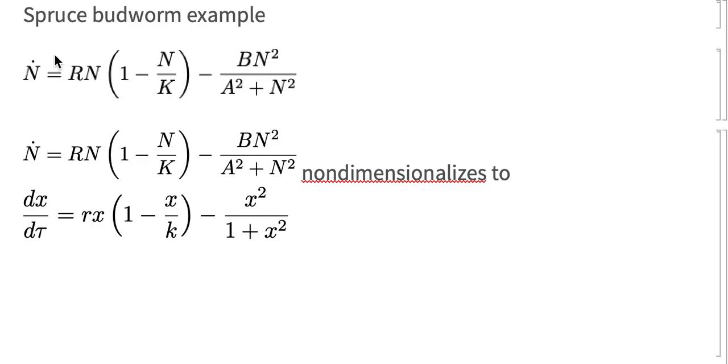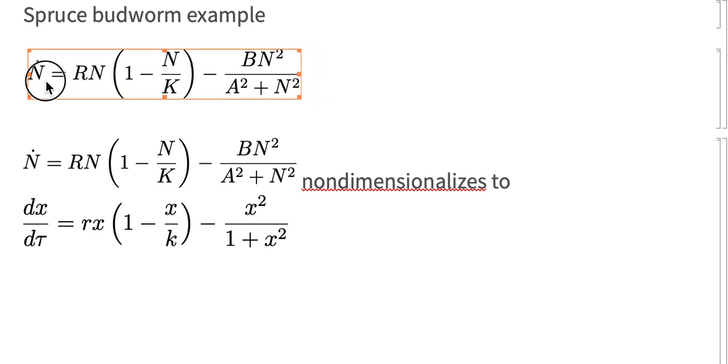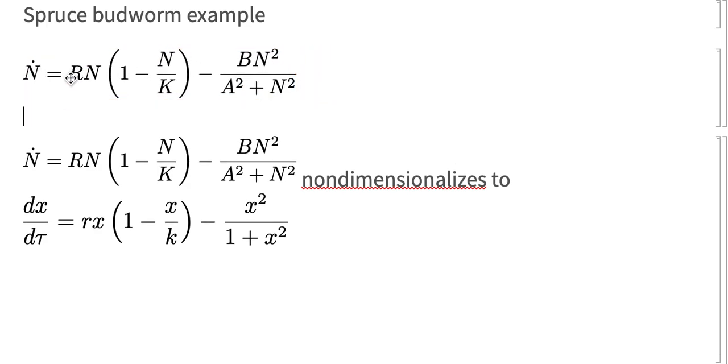We've seen the equation set up for the spruce budworm example. The equation is here and it has four parameters, these population parameters and these predation parameters.